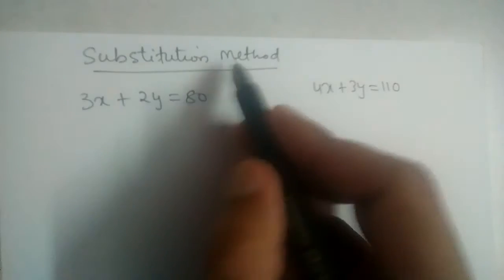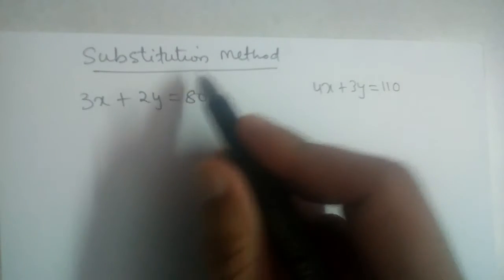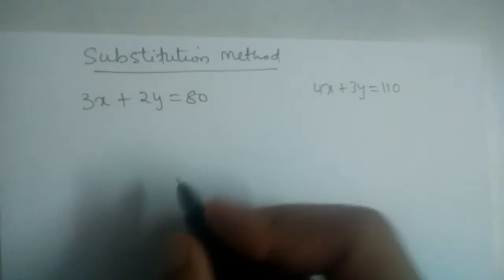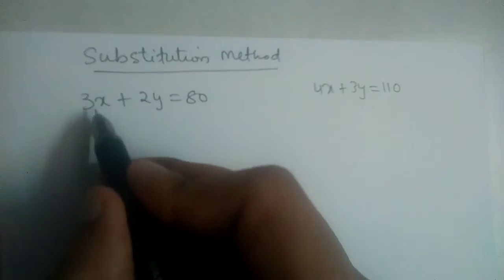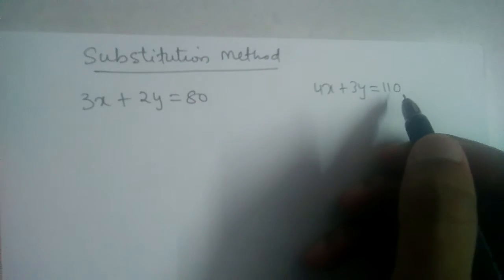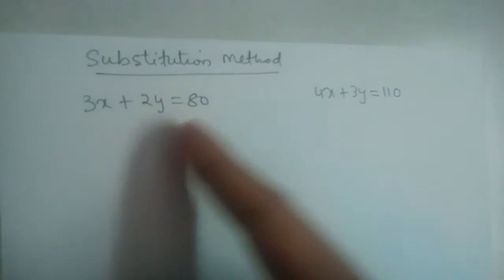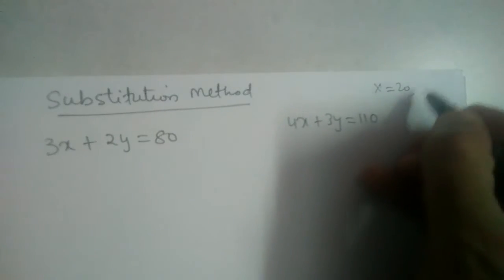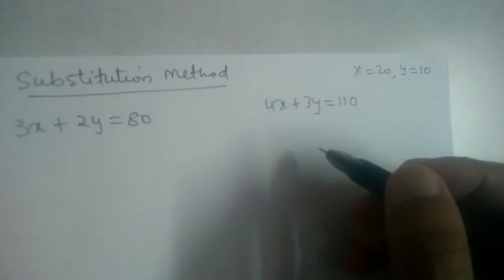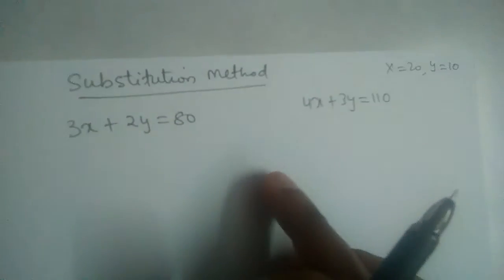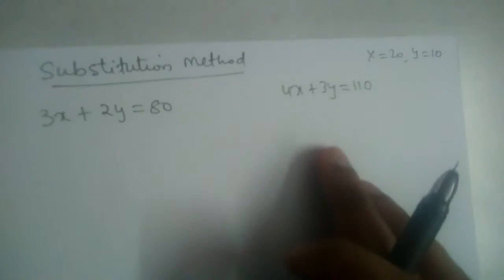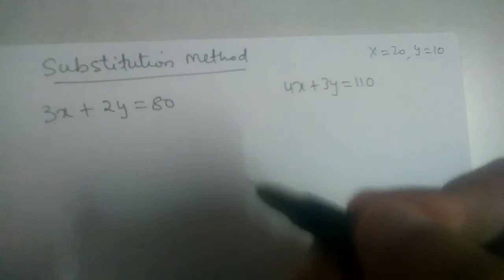In this video we will learn the substitution method. This method is used to find the value of x and y when linear equations in two variables are given. We have 3x + 2y = 80 and 4x + 3y = 110. If you watched my previous video, we solved this graphically and got x = 20 and y = 10. Now we will use the substitution method and see if we get the same answer.